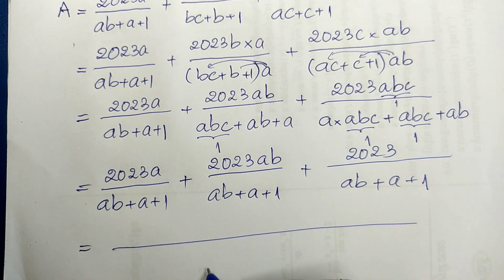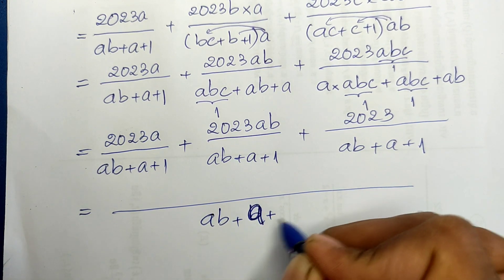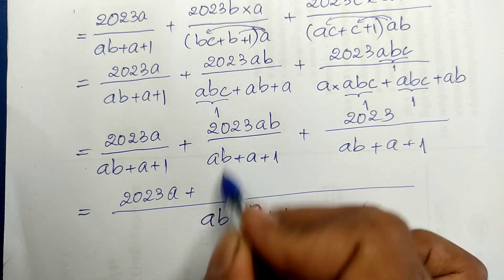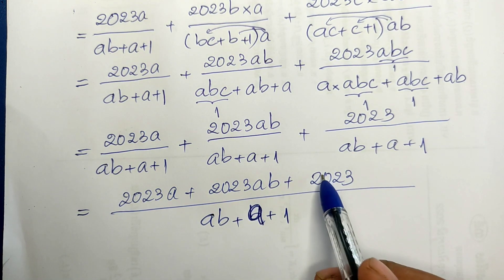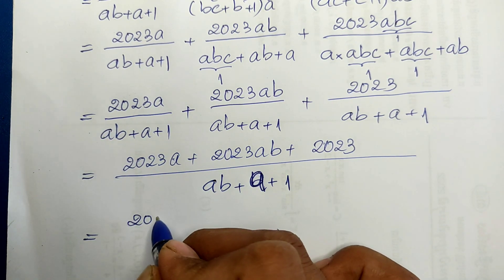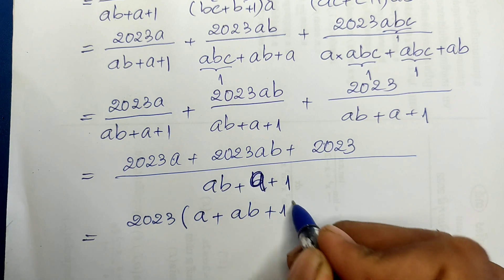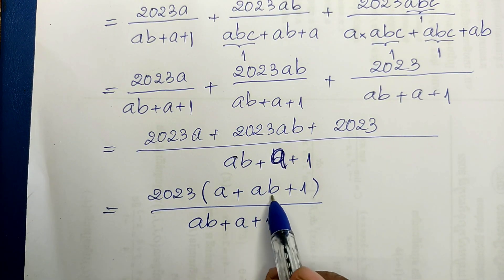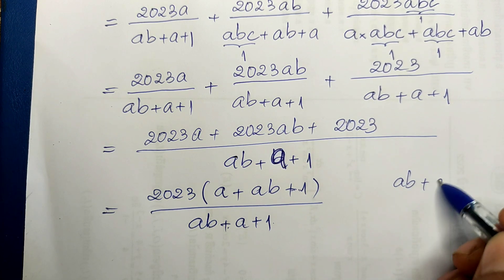The denominator for all three terms is the same: (ab + a + 1). We can factor out 2023 from all three numerators. The numerators combine as: a + ab + 1. So we get 2023 multiplied by (a + ab + 1), divided by (ab + a + 1), which is the same expression.